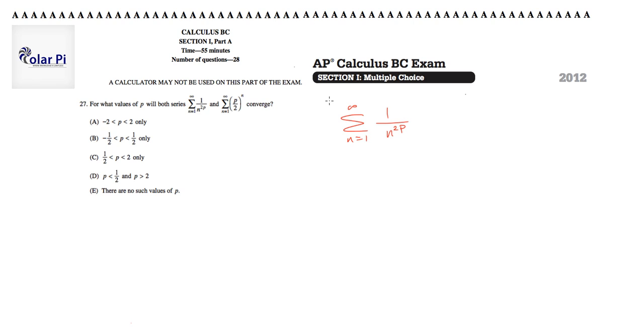So that amounts to us solving for when 2p is greater than 1. And that's immediate. That's when p is greater than 1 half. Great. So it looks like a value of p that is greater than 1 half will suffice for this series to converge.